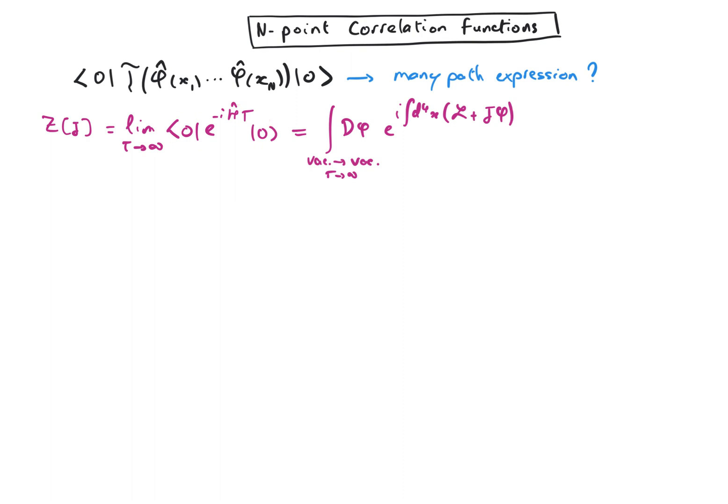We formally expressed that in the canonical quantization framework, because we have here an operator and here states. But we essentially work with this quantity in the many-path approach, where we had a path integral over all the possible paths connecting the vacuum to vacuum over an infinite time. And what we were summing was exponential of I times the action.